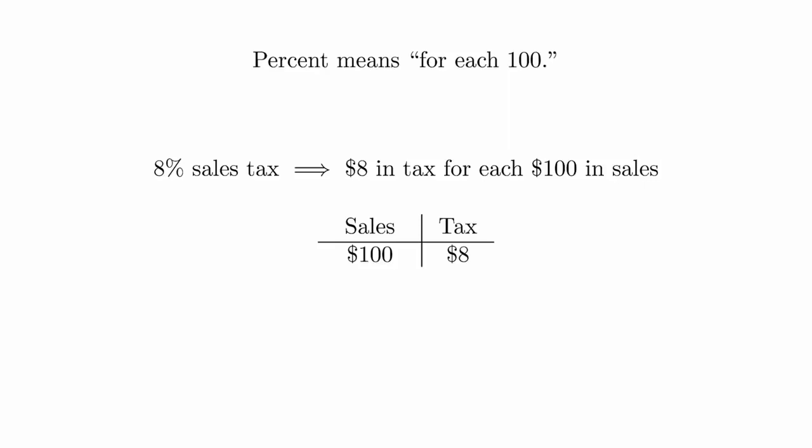This means that if you spend $200, you will pay $16 in taxes, and if you spend $1,000, you will pay $80 in taxes.